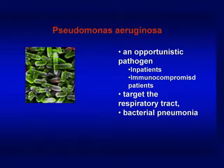Although infection with Pseudomonas aeruginosa can target many different parts of the body, Pseudomonas aeruginosa usually targets the respiratory tract, causing bacterial pneumonia.